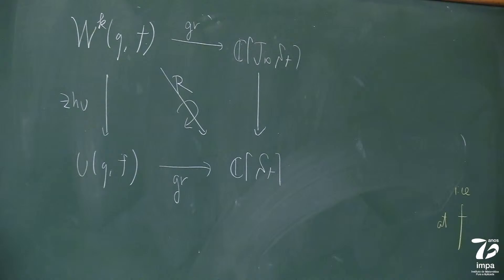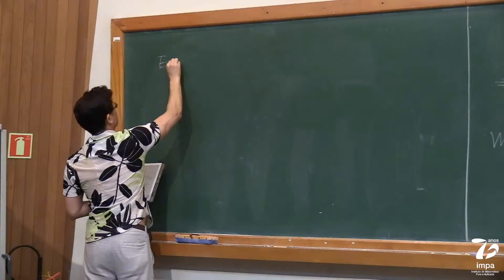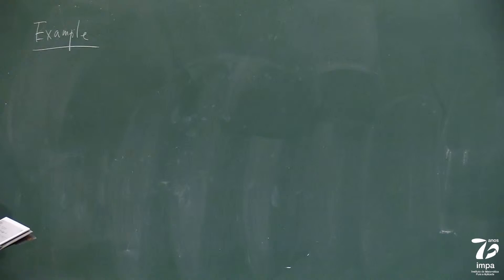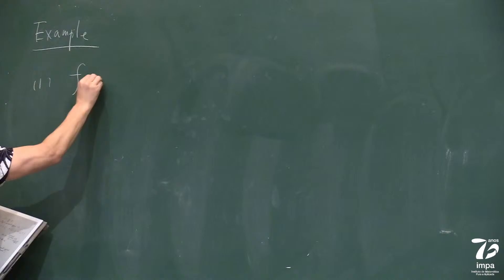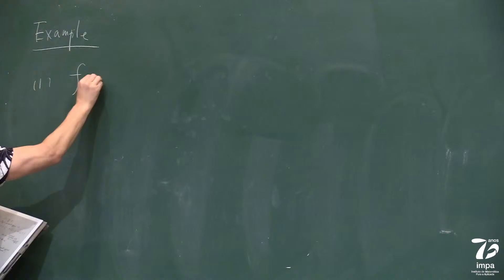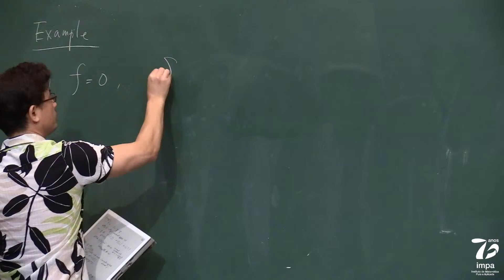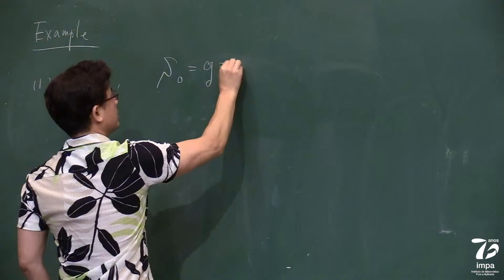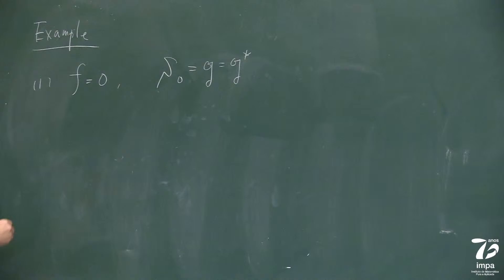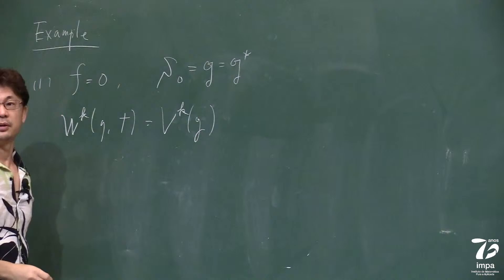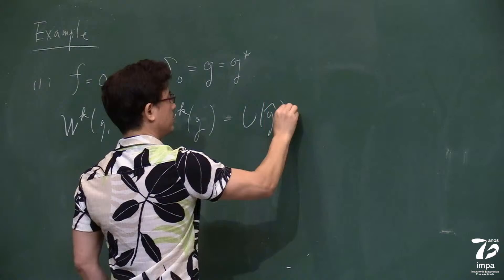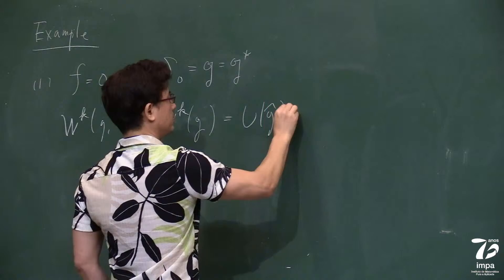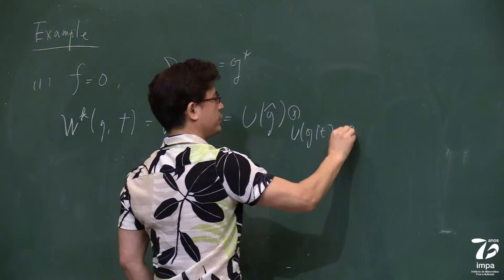Because there are many nilpotent elements, there are many W-algebras. Let me show some examples before going to the definition. When F equals zero, we consider the Slodowy slice at zero to be just G, identified with G-star as a Poisson variety. The corresponding W-algebra is nothing but the universal affine vertex algebra, which is U(G-hat) / U(G-hat)(G⊗t + CK), where K acts as k times the identity and G⊗t acts as zero.